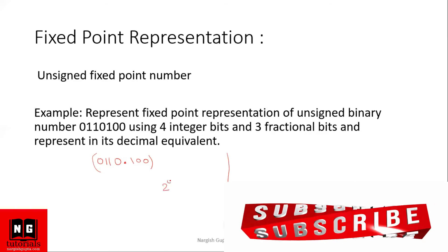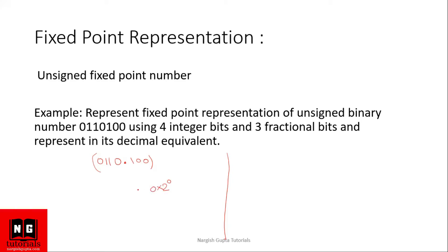We start taking from two to the power zero — this bit is zero, so we take zero, plus two to the power one multiplied by one, plus two to the power two multiplied by one, plus two to the power three multiplied by zero. Calculating: zero plus two plus four plus zero gives us six for the integer part.